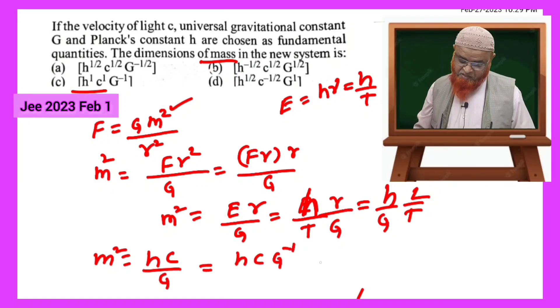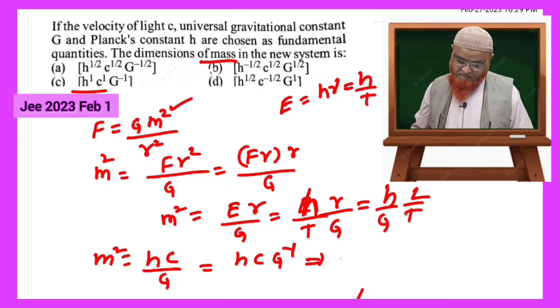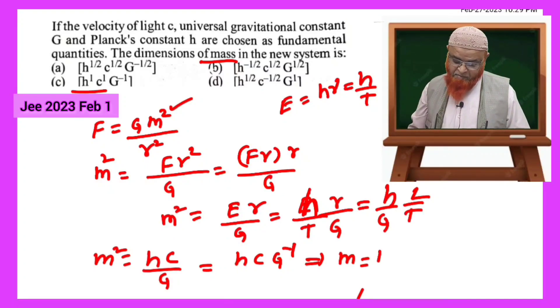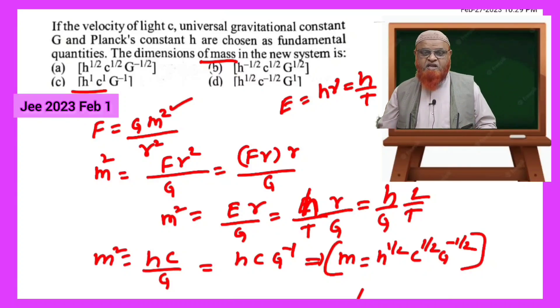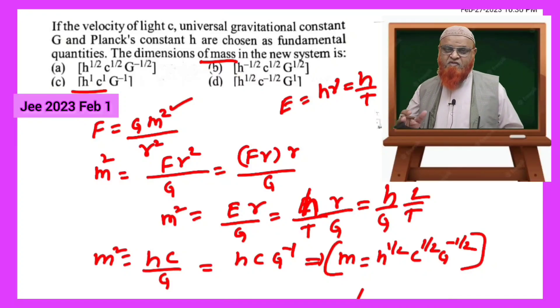This implies that mass, if you consider square goes to that side, it's going to become h power of 1/2, c power of 1/2, and G power of minus 1/2. So this is the method of solving the problem without using dimensional formulas. Hope you have understood this one. Thank you very much.